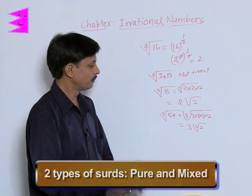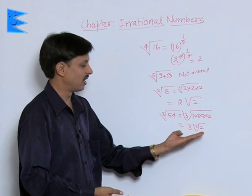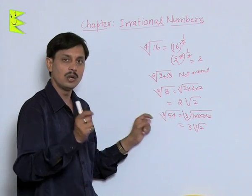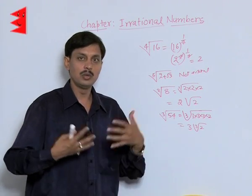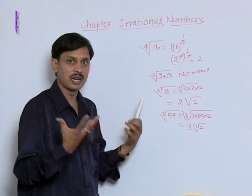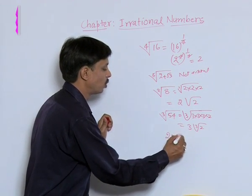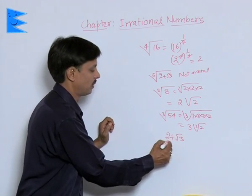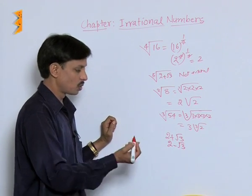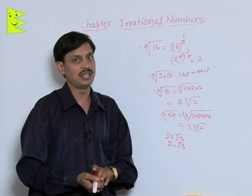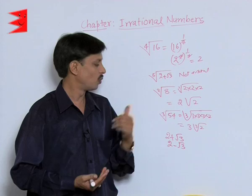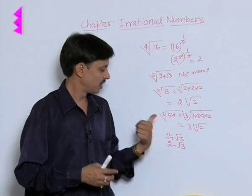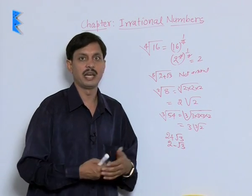Surds are of two types: pure and mixed. The key property to remember is that the final answer must be irrational, and the order must be a natural number — 2 or more. For example, 2 + √3 has an irrational net answer but is not a surd. Similarly, 2 − √3 is not a surd. Remember: surds are numbers where the radicand is rational, the order is a natural number 2 or more, and the final answer is irrational.